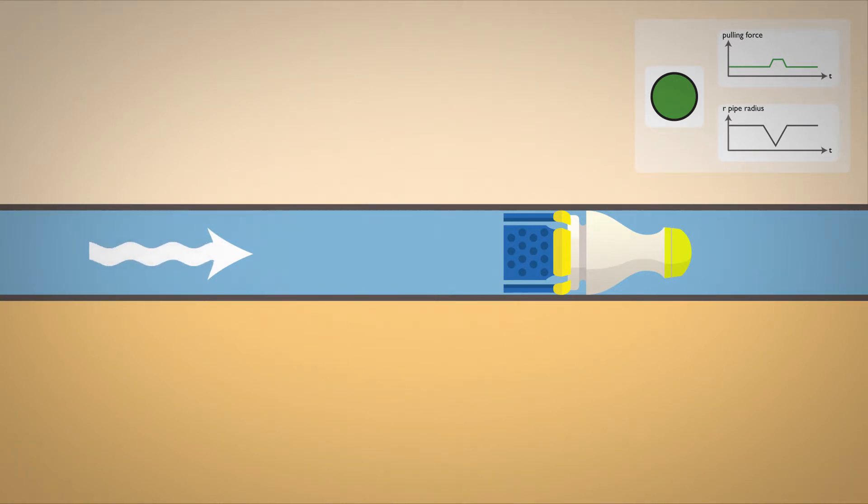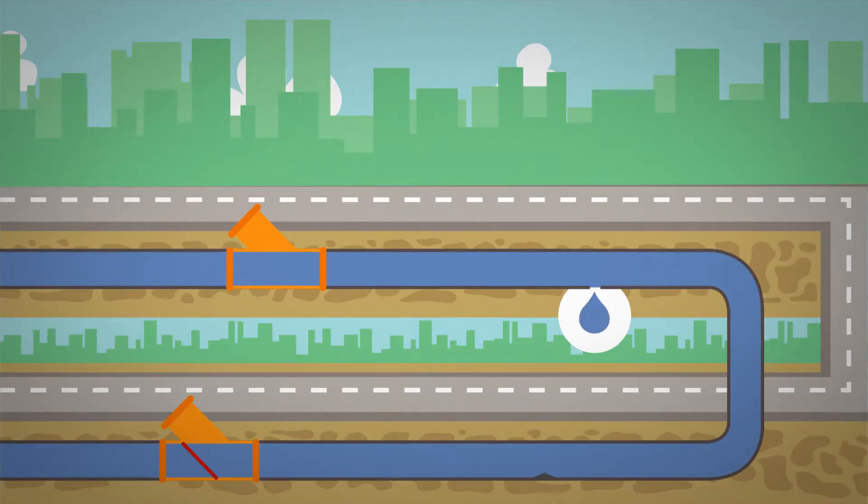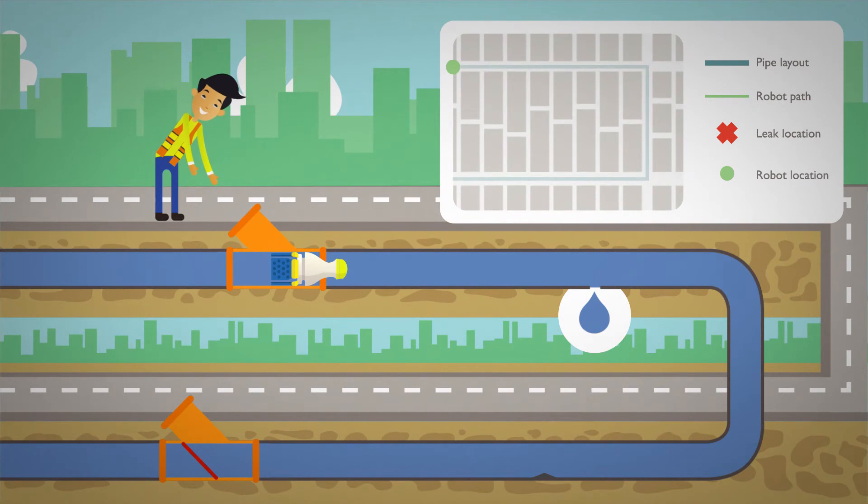Now let's look at how a technician can use this robot. The technician's job is to find if there are water leaks and where they are. He arrives at the job site, puts the robot into the underground water pipes through a customized robot launcher.